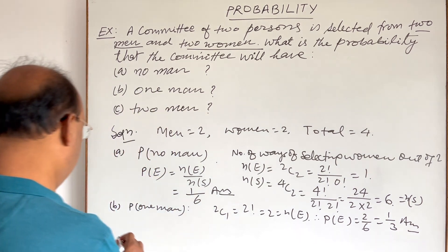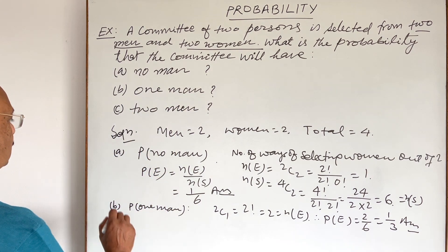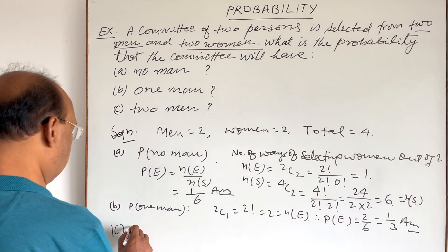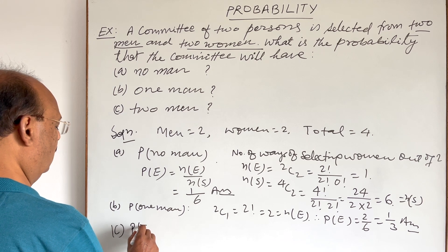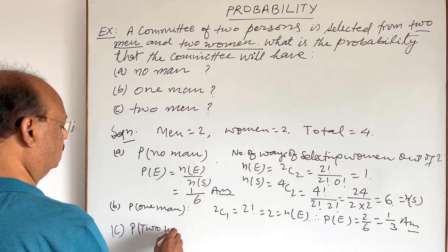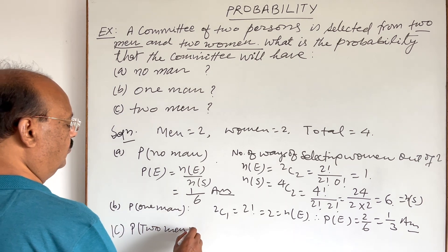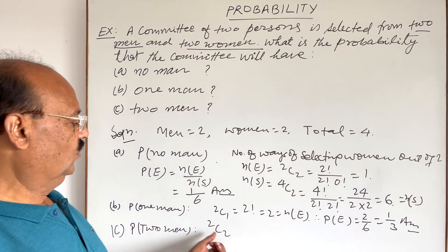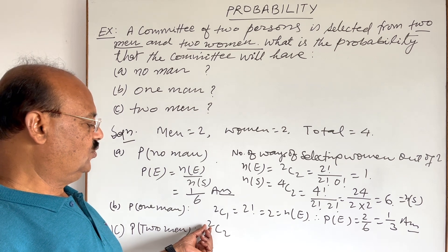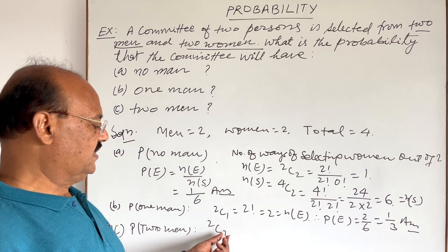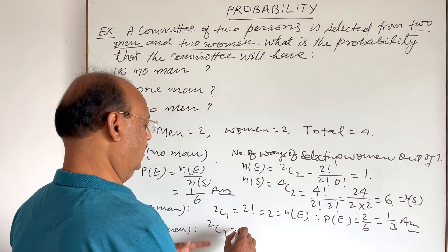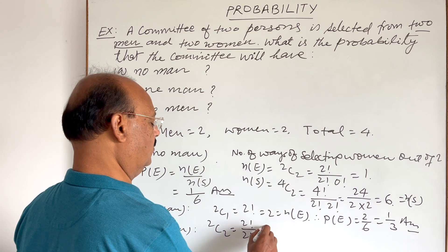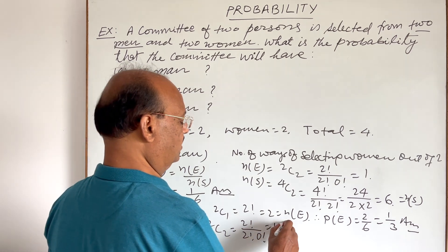For part C, we have to find the probability of selecting 2 men. We can select 2 men in 2C2 ways — total number of men is 2 and both will be selected. This is 2 factorial by 2 factorial into 0 factorial, which equals 1. This is N(E).